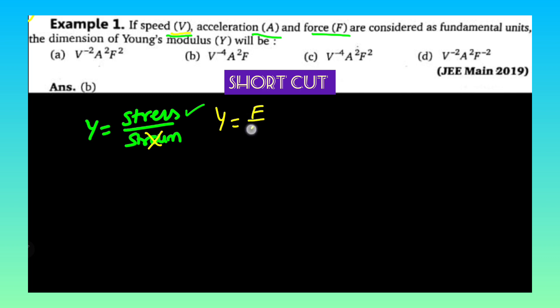Stress is equal to force by area. Strain does not have dimensions. So here you all know area means you can consider length into breadth which is nothing but L square. And you also know that there is a formula v square minus u square is equal to 2 into a into s.